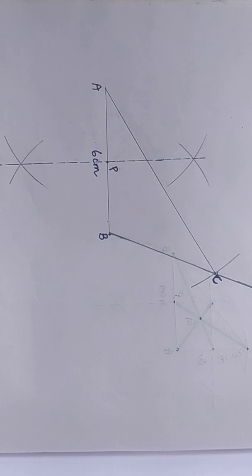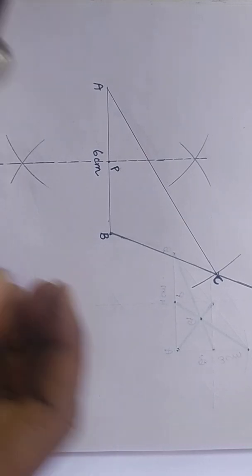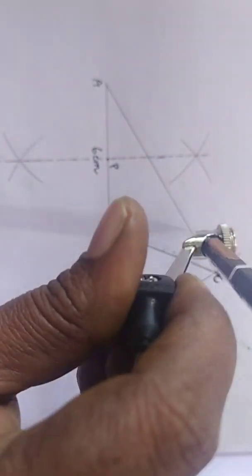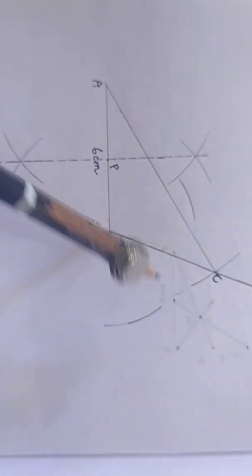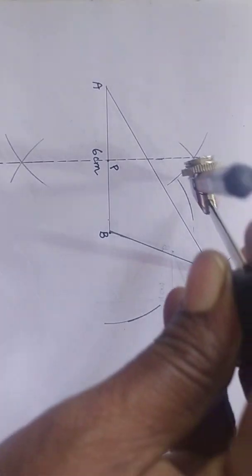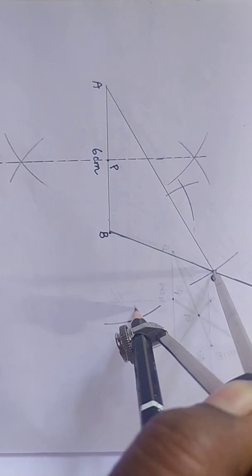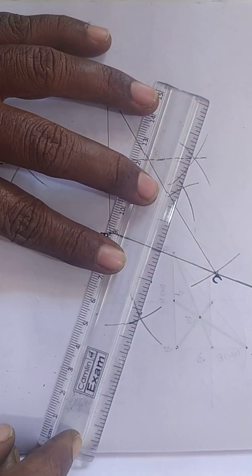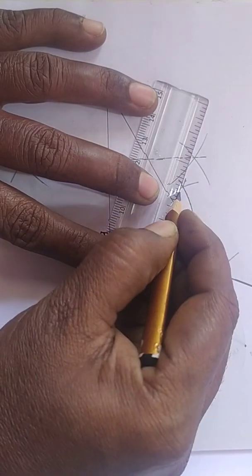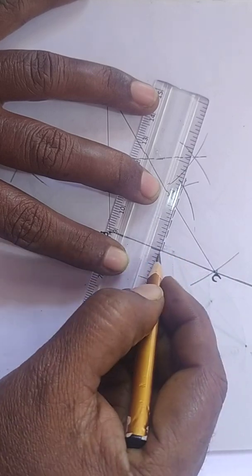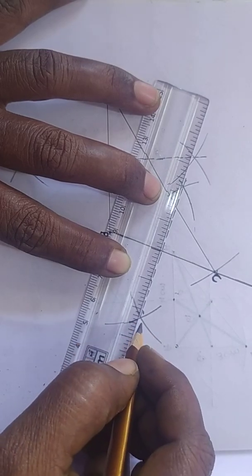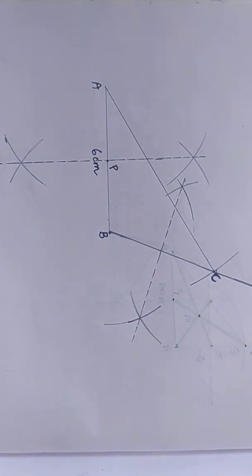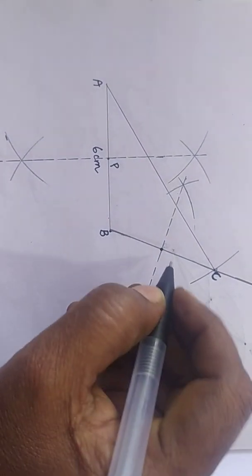In the same way I am going to construct a perpendicular bisector for side BC. Take more than half of BC and cut arcs above and below BC. With C as center cut arcs above and below BC. Now join using dotted lines. Now you got the midpoint for BC. This is the midpoint of BC. Let us name it as Q.